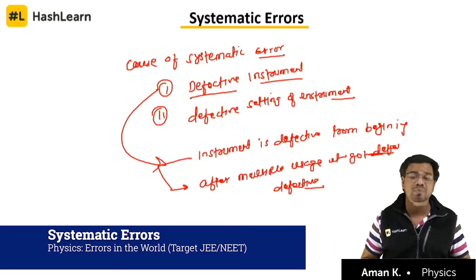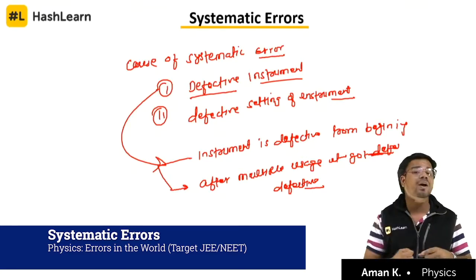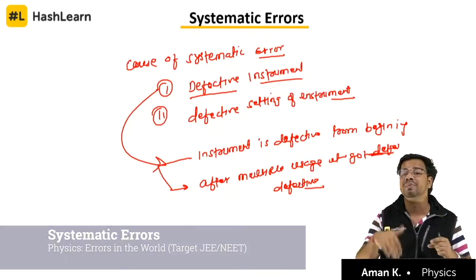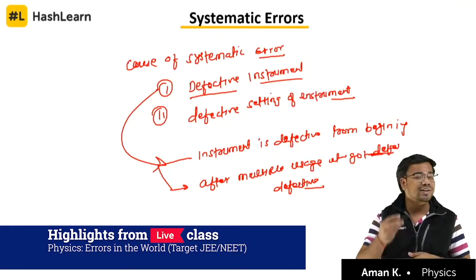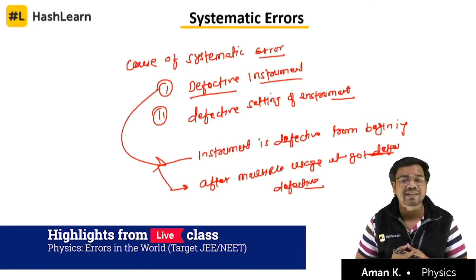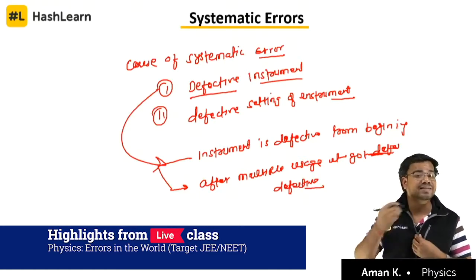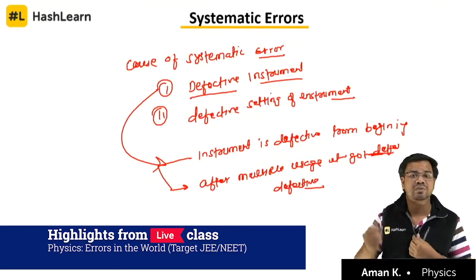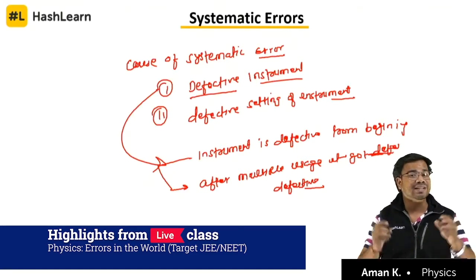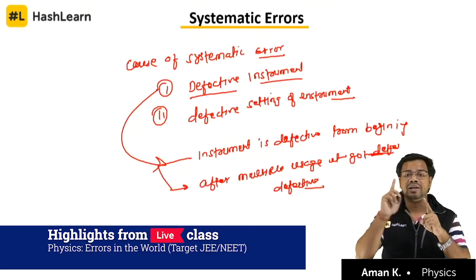What is a defective instrument? It can be of two types: either that instrument is defective from manufacturing or from the beginning, or it got defective after multiple uses. For example, suppose during the construction of a thermometer it is made 0.99 degree instead of 1. So whenever you measure the temperature, you will get a lower temperature compared to the actual.